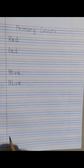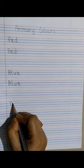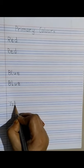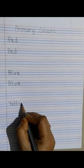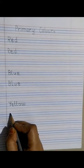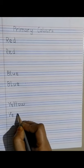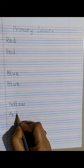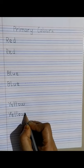Then we leave one line and we will write yellow. Yellow: Y, once more Y, E, E, L, L, O and W. Yellow.